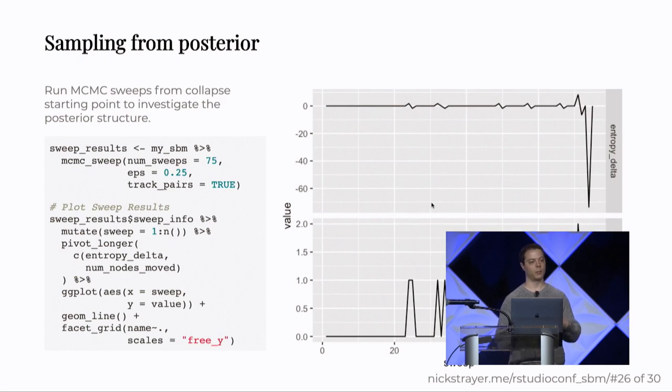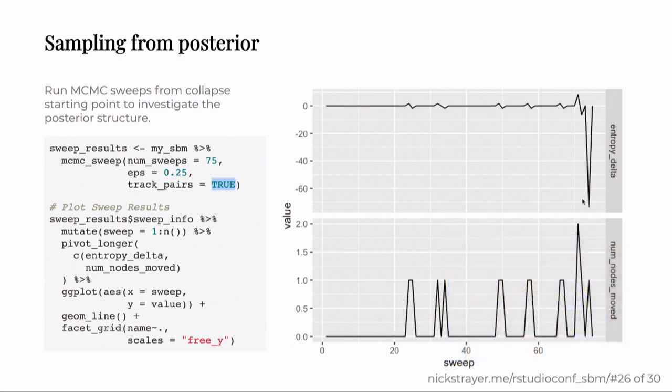So once we have that equilibrated posterior situation, we can do MCMC sweeps. And so we can just pipe our model object to this function MCMC sweep, tell it how many sweeps we want to do. We give it an epsilon value and epsilon in this case is an ergodicity parameter. So it influences how random your choices of different nodes are. When a node is being checked in the sweep, how likely it is to be given to just a random group rather than one that follows the data. We also have this interesting value called track pairs here that we'll get into in two seconds. But what we can see is that we have a very stable chain. And honestly, that's because it's perfectly equilibrated. We know exactly where it is and it perfectly fit there.